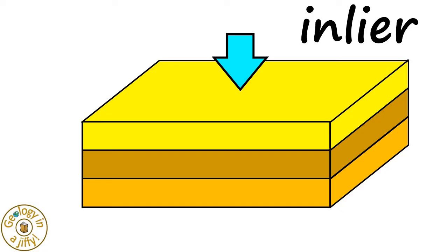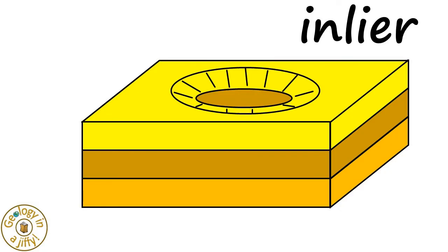an inlier could form here through the upper younger layer. Maybe due to erosion or faulting, forming a hole in the upper younger layer, exposing the older layer below it, our inlier.